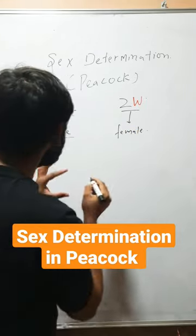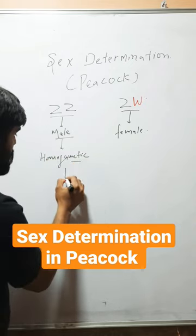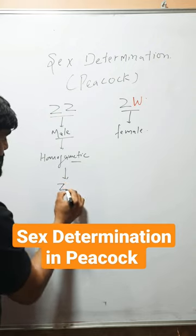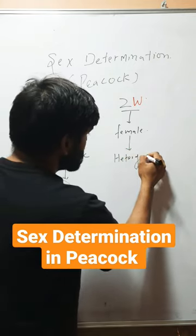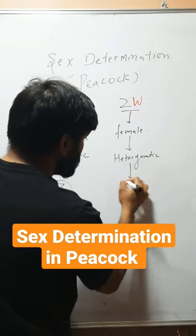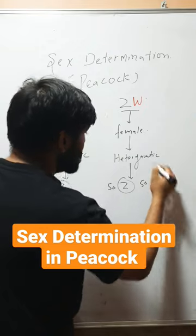So here you can see that male is homogametic, means it will produce only one type of gamete that is Z. Here female is heterogametic. It will produce two types of gamete: 50% will be Z and 50% will be W.